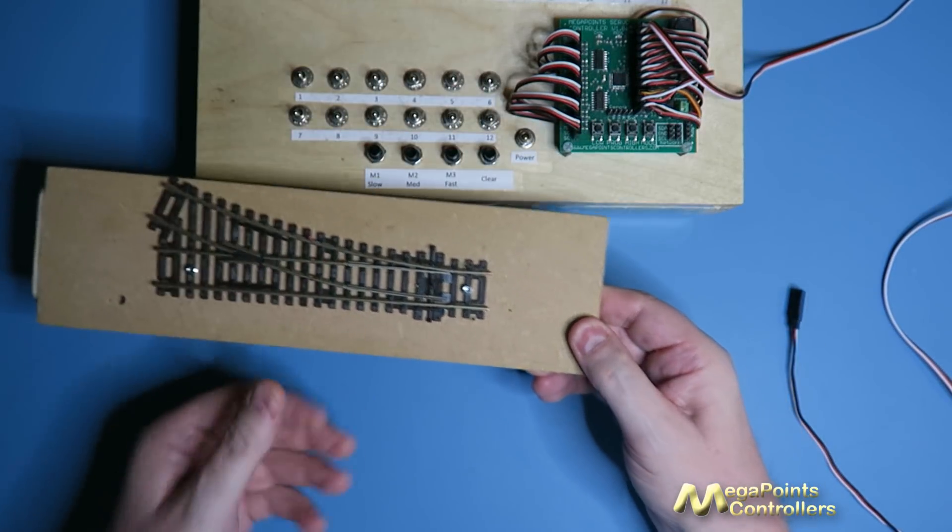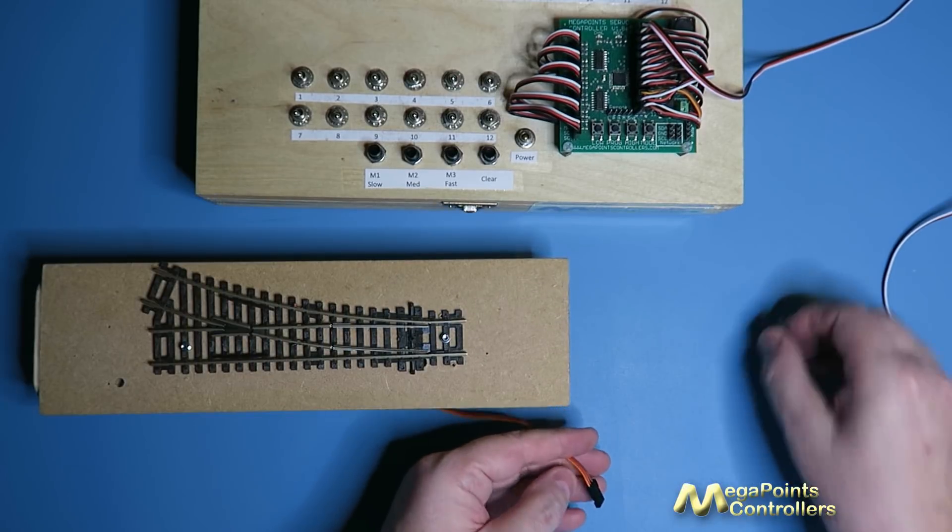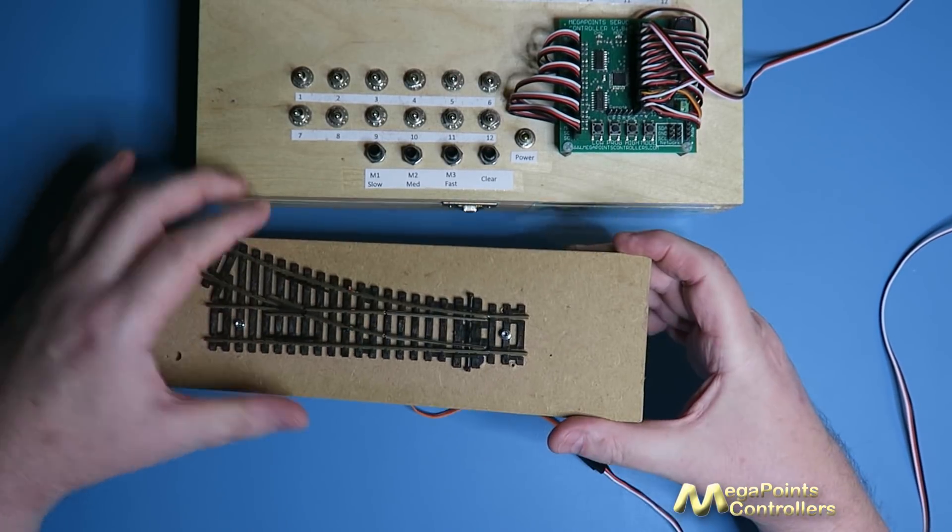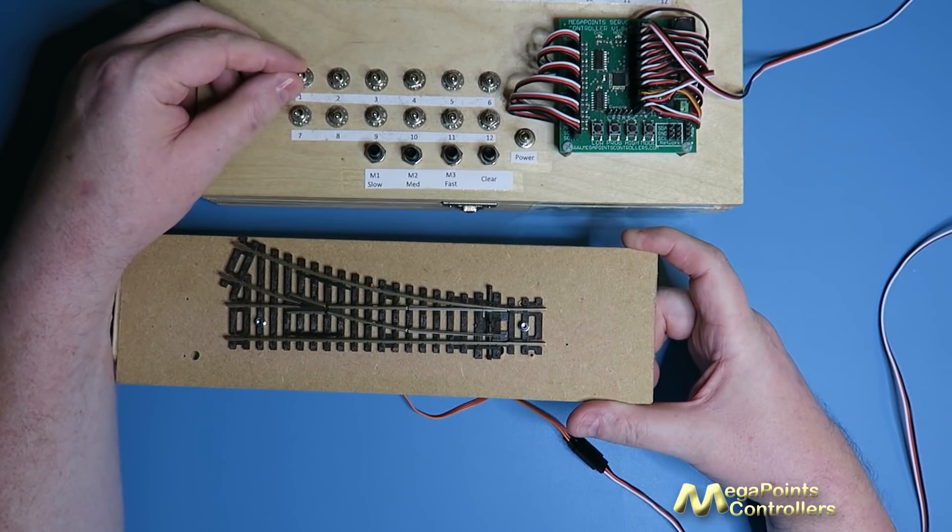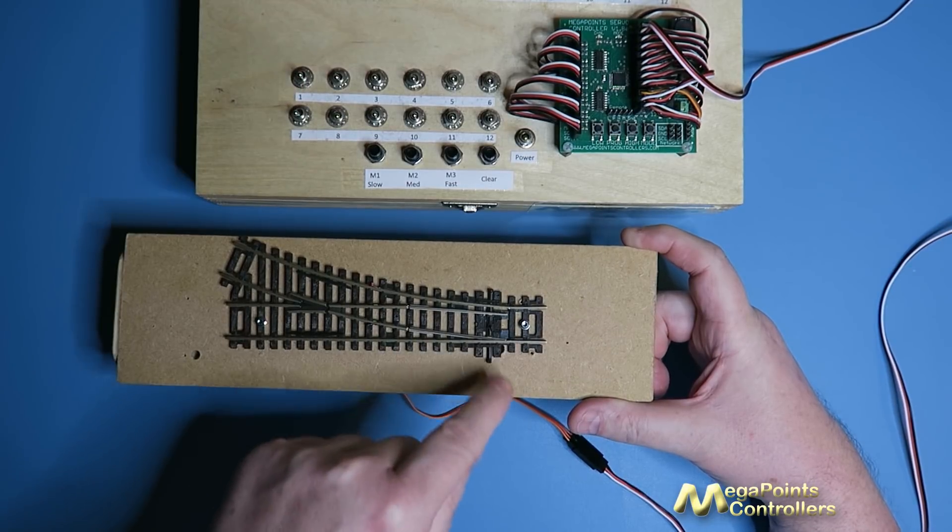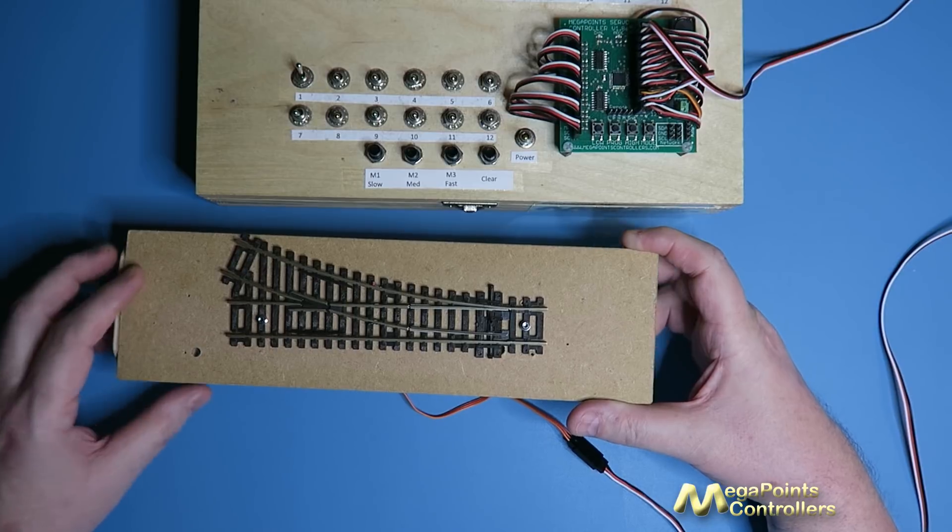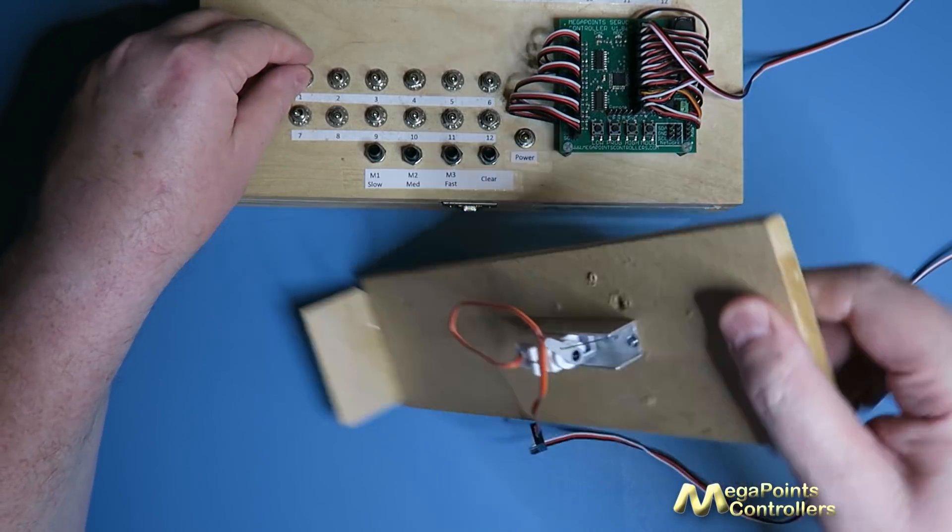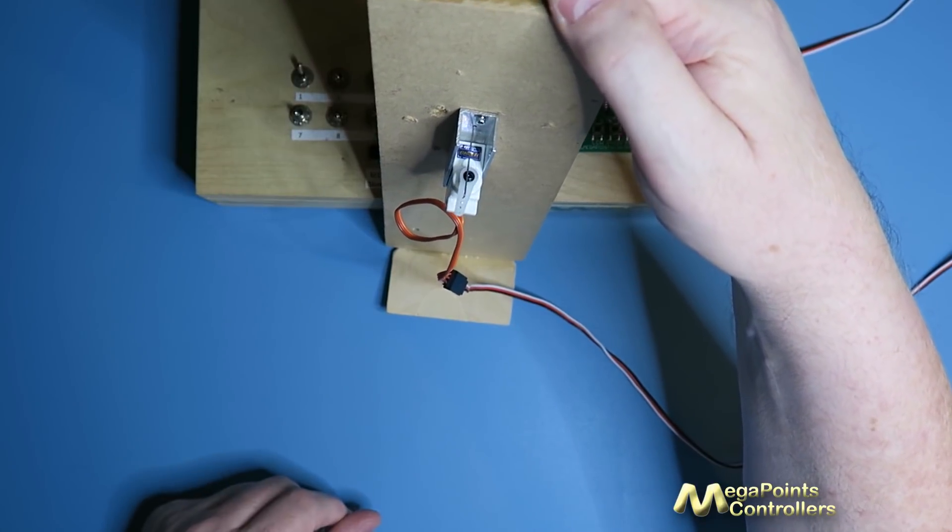So I've installed a servo like this and then I will attach it to a servo controller, flick a switch, and you can see it's working nice and smooth, perfectly mating the blade to the stop rail without any real effort or adjustment. Behind the scenes you can see what's happening. If I hold it here you can see the servo is moving just fine.